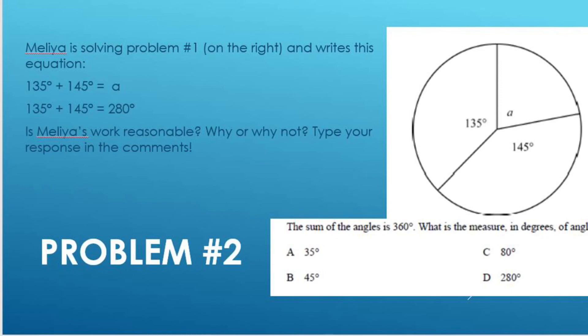If I were to have 145 degrees plus 135 degrees plus 280 degrees, that would be way more than the amount of a circle, which is 360 degrees.